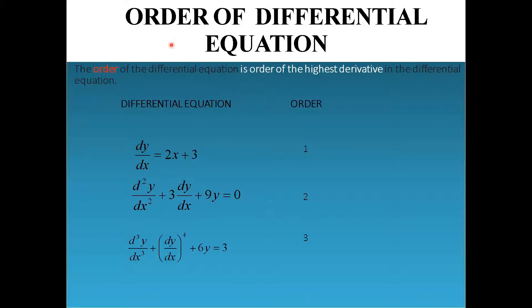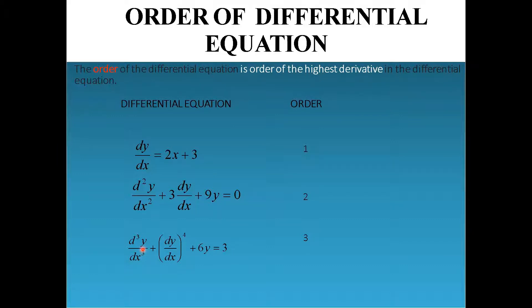The order of a differential equation is the order of the highest derivative in it. For example, if the highest order derivative is first order, the order is 1; if it's second order, the order is 2. For a third equation, students should be made clear that even though the highest power might be 4, that power is not associated with the highest order derivative. The highest order here is 3 — the third derivative — so the order is 3. Confusion between maximum power and order must be eliminated.